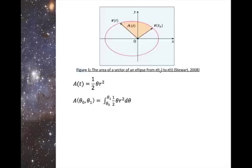In this case, θ0 is the angle that r of t0 makes with the polar axis, and θ1 is the angle that r of t makes with the polar axis. We can find the rate at which it changes by taking the derivative of both sides, like so.